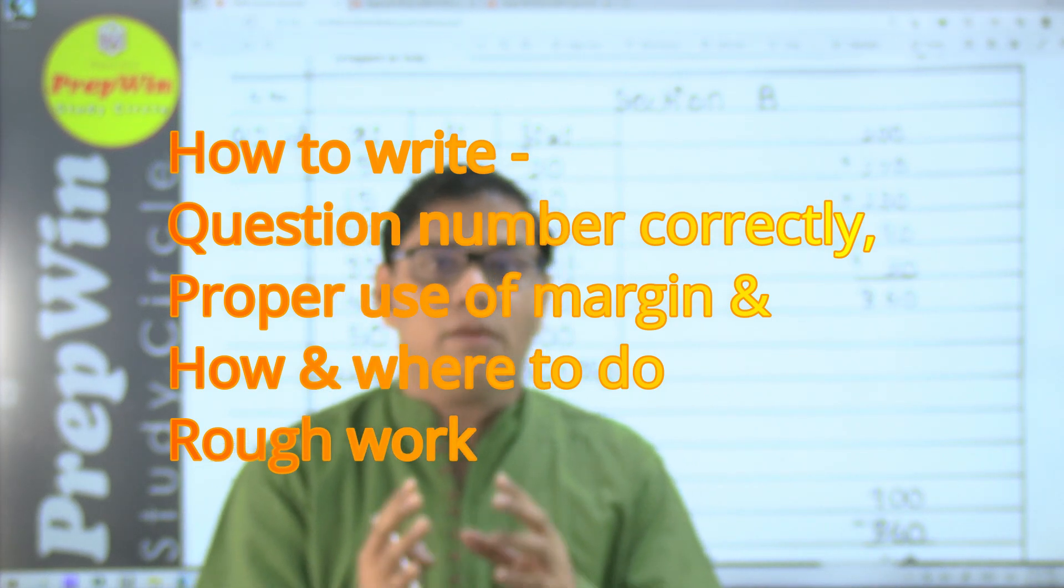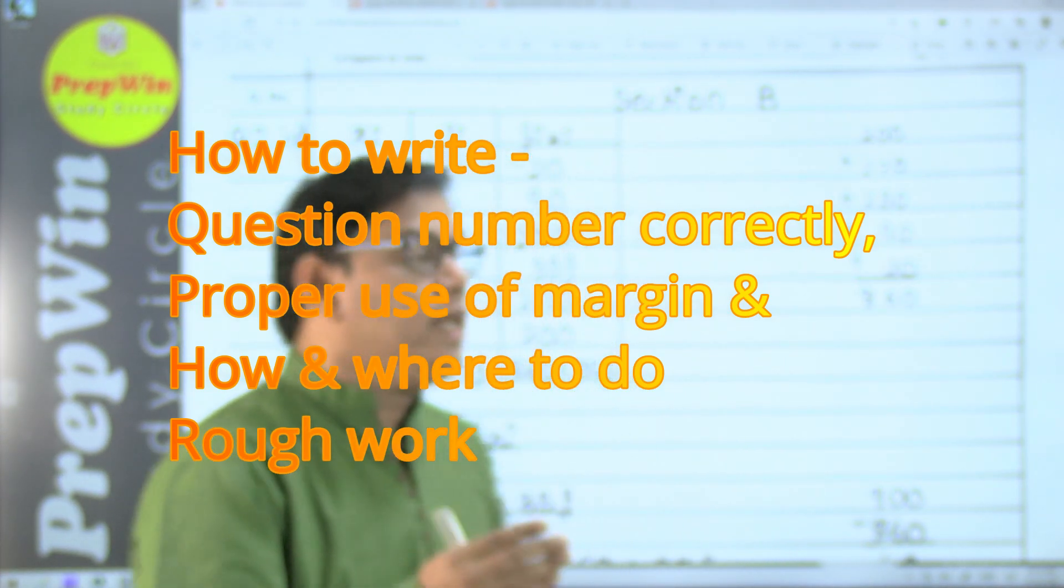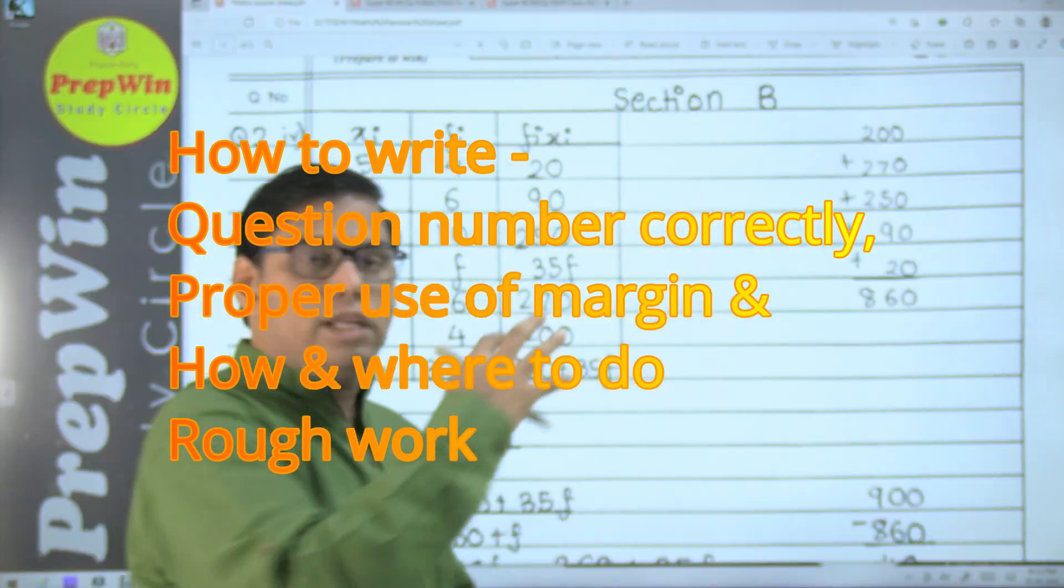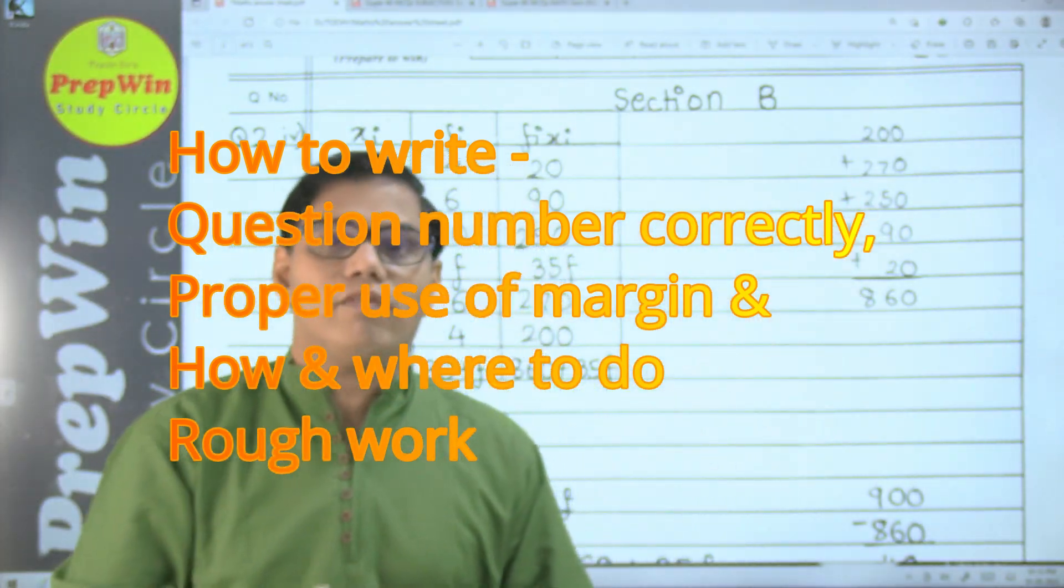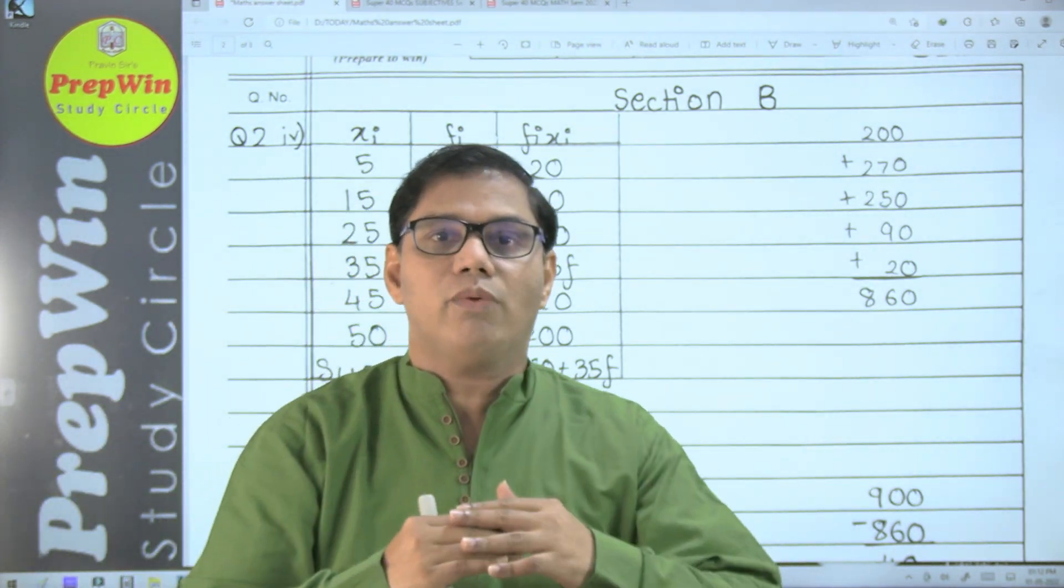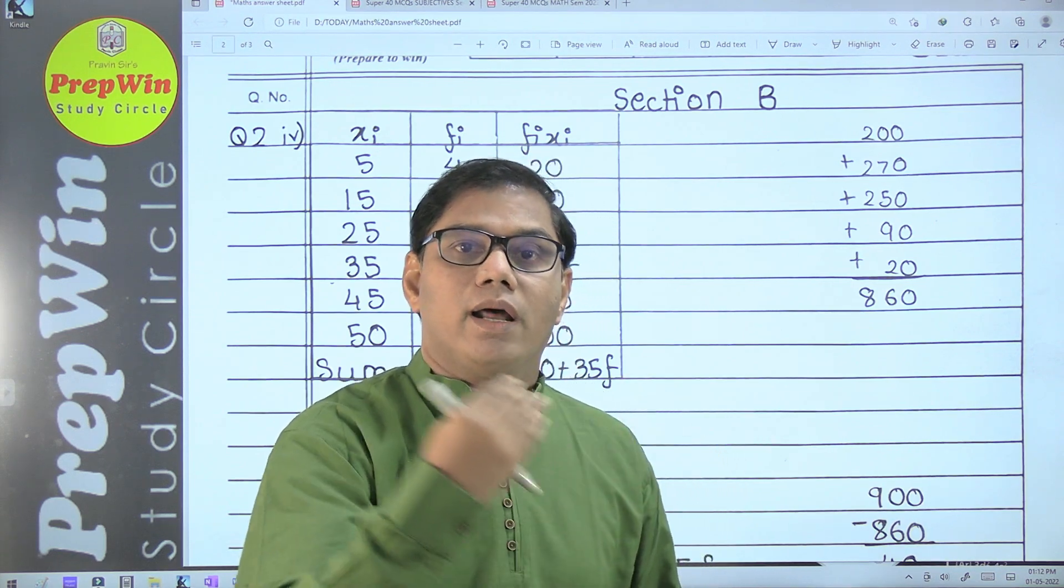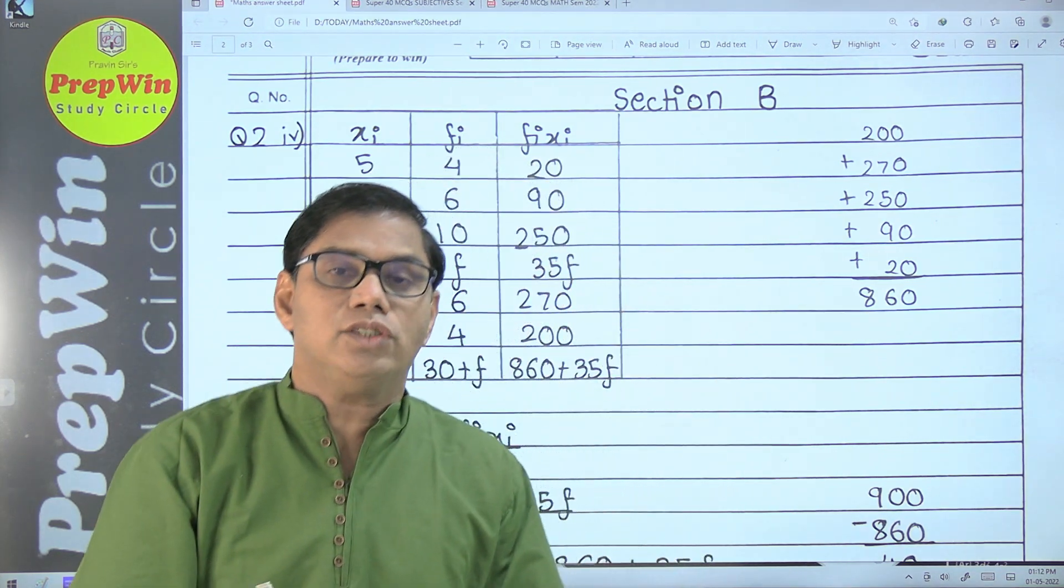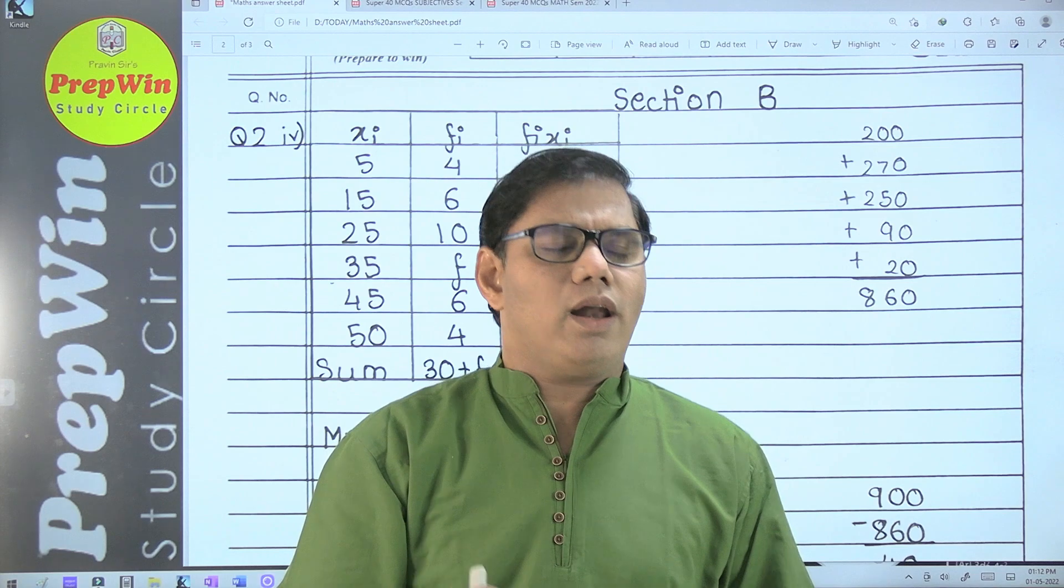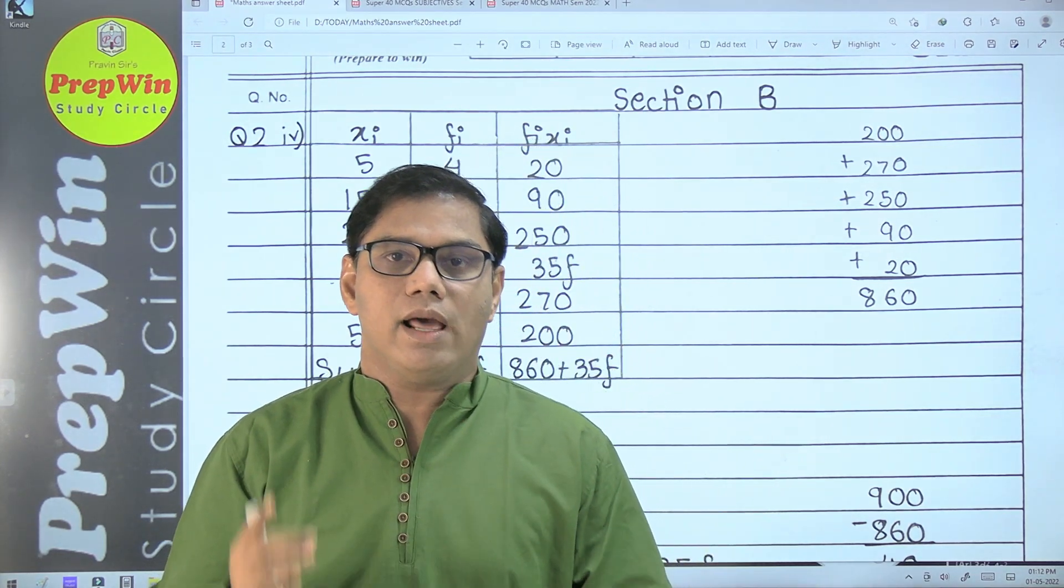How to write a question number or working column? Do we need to draw a margin? Should the working be on the right-hand side of the margin, at the end of the margin, or should I use a separate paper or the last page of my answer sheet to write the working column? Students have so many confusions and doubts in their mind.